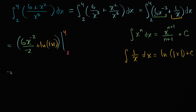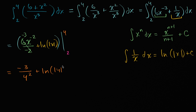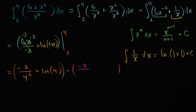So what is this going to be equal to? Six divided by negative two is negative three. Evaluating at four: it's negative three over four squared, plus the natural log of four — since the absolute value of four is just four. Then we subtract everything evaluated at two: negative three over two squared, plus the natural log of two.